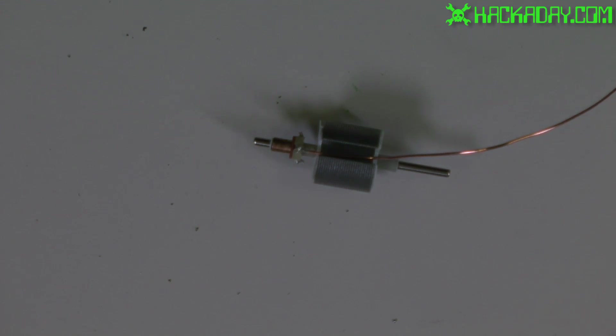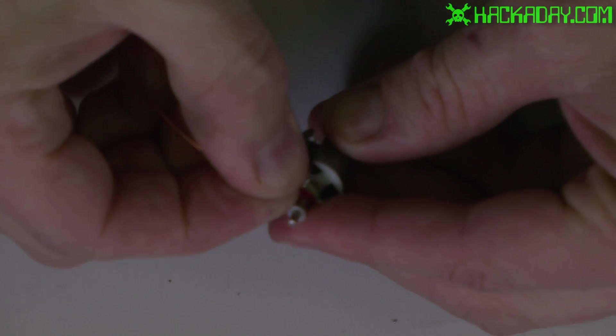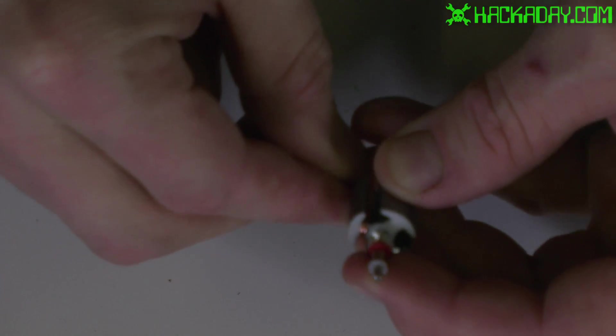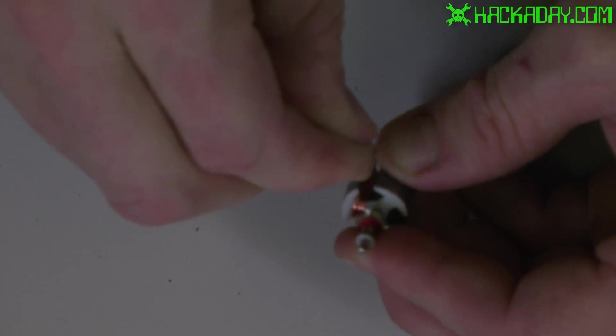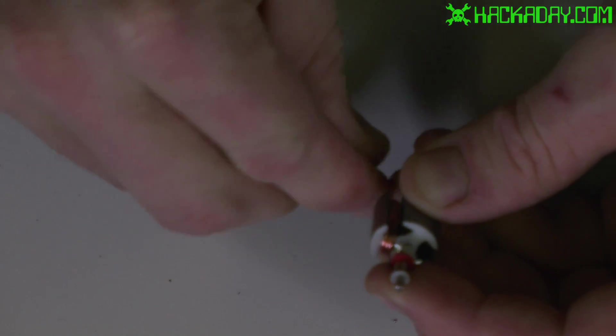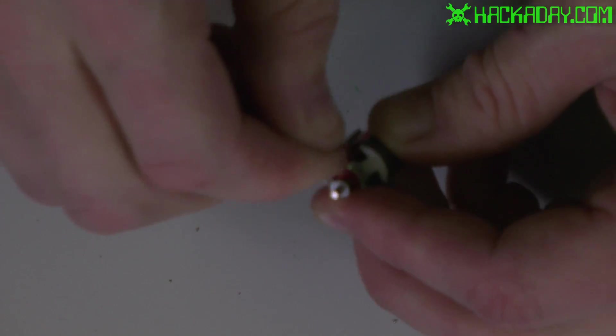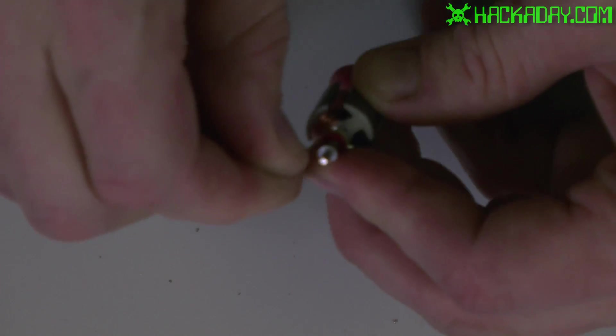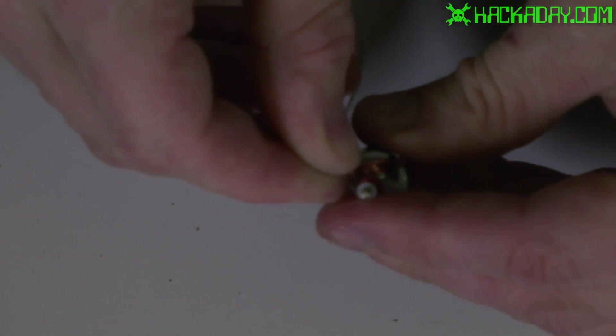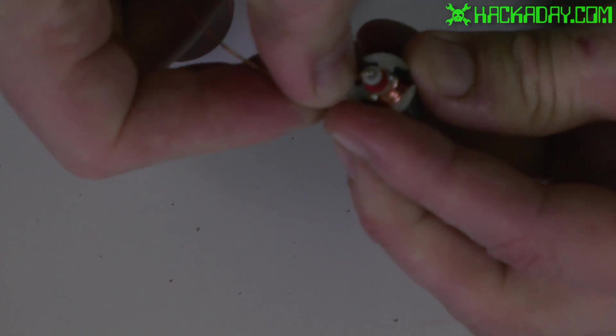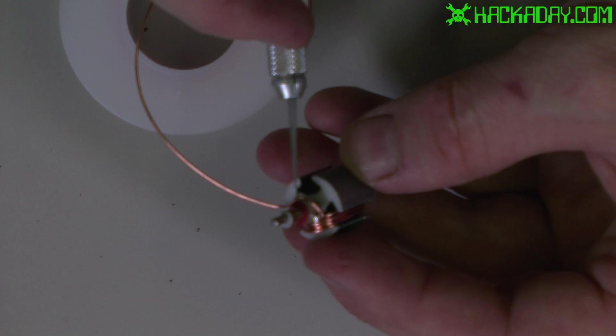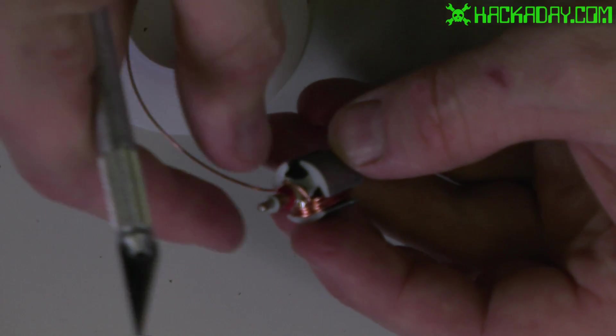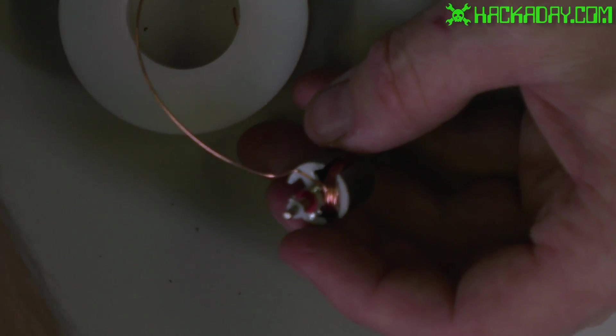I've pretty much got the enamel off. I'm going to solder this onto one of the terminals. Now I'm going to wind this electromagnet and what I would like to do is keep these as even as I can get them and I want to count how many turns.